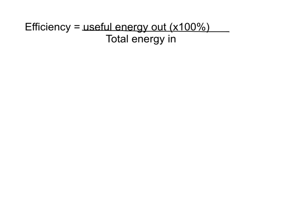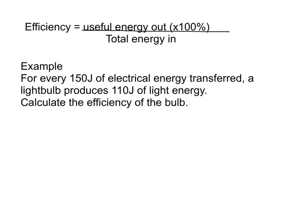You'll see in our example that when we're calculating the efficiency, you can either leave your answer as a value between 0 and 1, or you can multiply it by 100 to convert it to a percent. If you're converting it into a percentage, then you need to show your units, otherwise your answer will be judged incorrect. Okay, so let's take a look at an example now. For every 150 joules of electrical energy transferred, a light bulb produces 110 joules of light energy. Calculate the efficiency of the bulb.